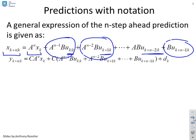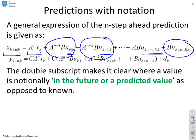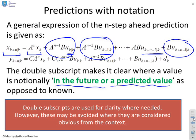Similarly, you can substitute that in for the output, but I won't dwell on that detail. Now the double subscript makes it clear where a value is notionally in the future or a predicted value or a decision variable, as opposed to something that you know. The double subscripts are used for clarity, but the key thing here is only where they're needed. You'll find quite often people don't put them in because they say it's obvious from the context what's a prediction and what's not. So if you don't need them, don't put them in. But if you think there's a possibility for confusion, then put them in.